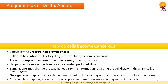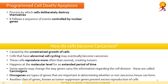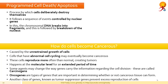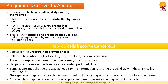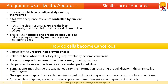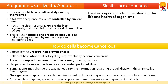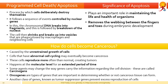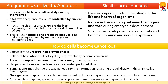What is programmed cell death or apoptosis? Apoptosis or programmed cell death is a process by which cells deliberately destroy themselves. The process follows a sequence of events controlled by nuclear genes. In this process, the chromosomal DNA breaks into fragments and this is followed by breakdown of the nucleus. The cell then shrinks and breaks up into vesicles that are phagocytosed by macrophages and neighbouring cells. Apoptosis plays an important role in maintaining the life and health of an organism. During human embryonic development, apoptosis removes the webbing between the fingers and toes. It is also vital to the development and organization of both the immune and nervous system.